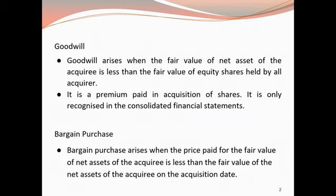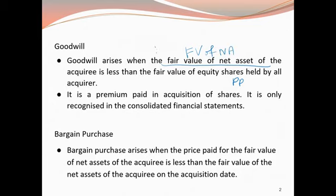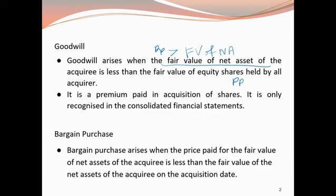Goodwill arises when the fair value of the net assets of the acquiree is less than the fair value of equity shares held by the acquirer. When the acquirer pays a consideration transferred or purchase price that is more than the fair value of the net assets of the acquiree or subsidiary, this results in goodwill. It is a premium paid in the acquisition of shares, and it is only recognized in the consolidated financial statements in a business combination treated as a single entity.